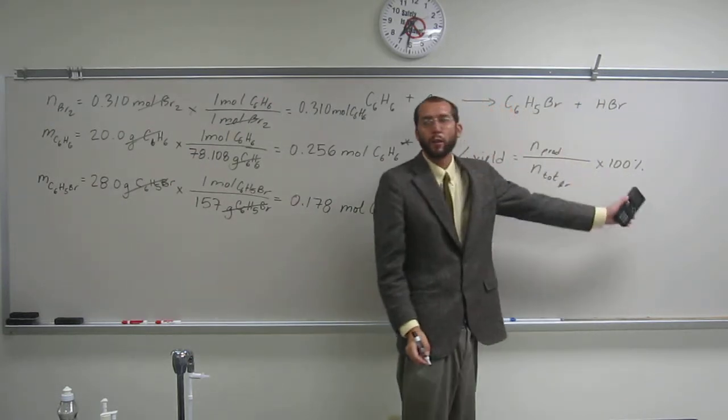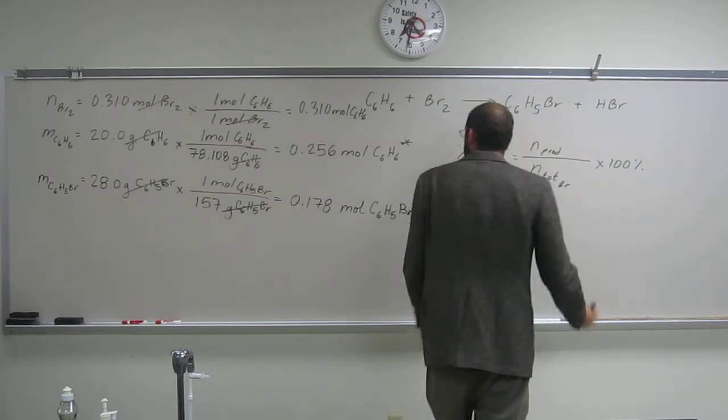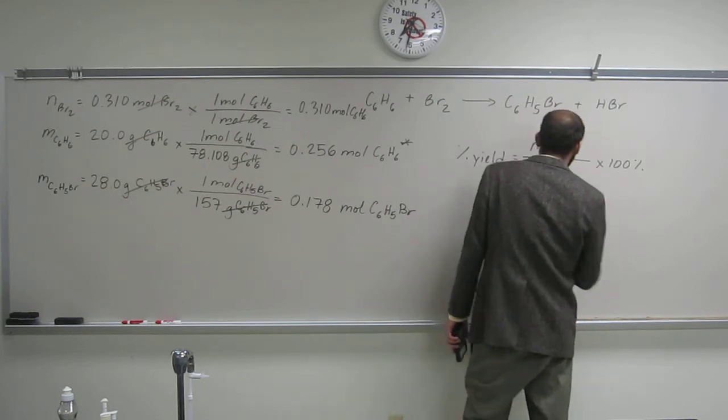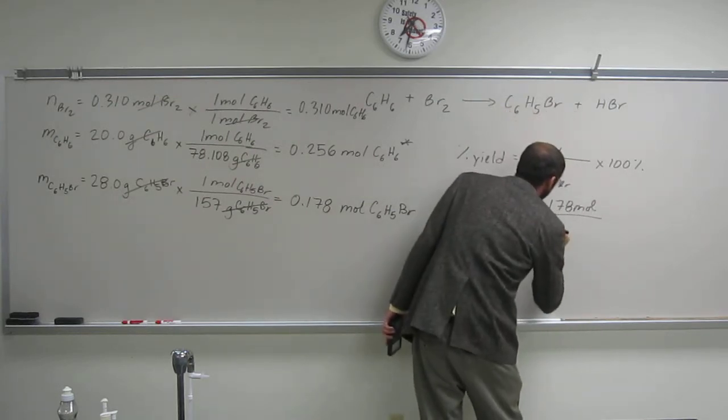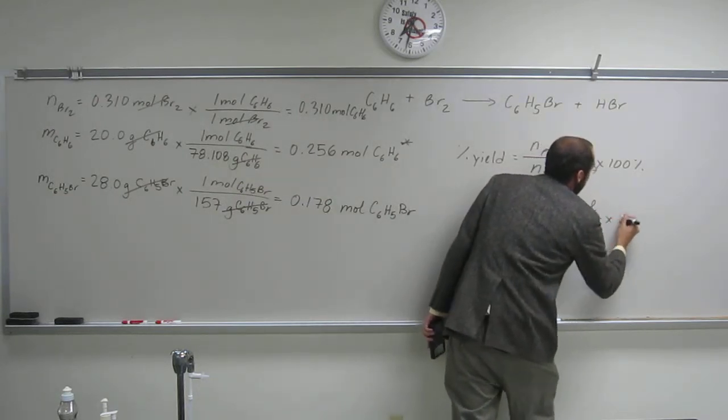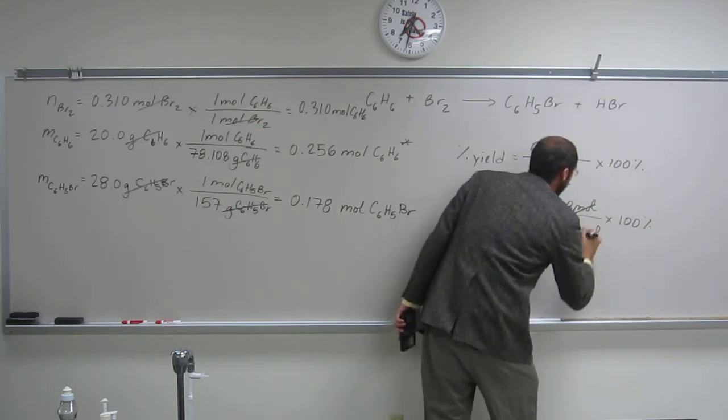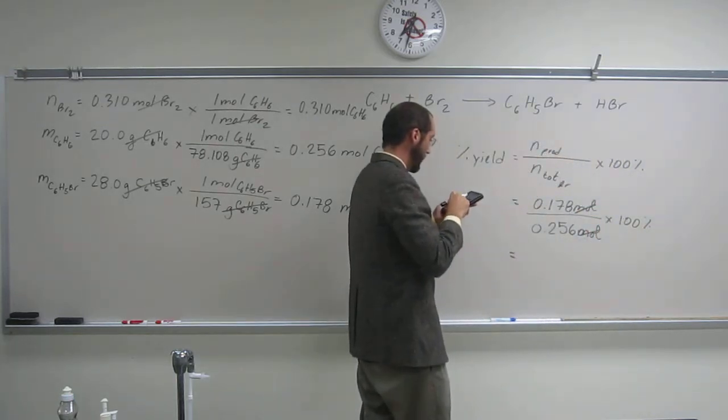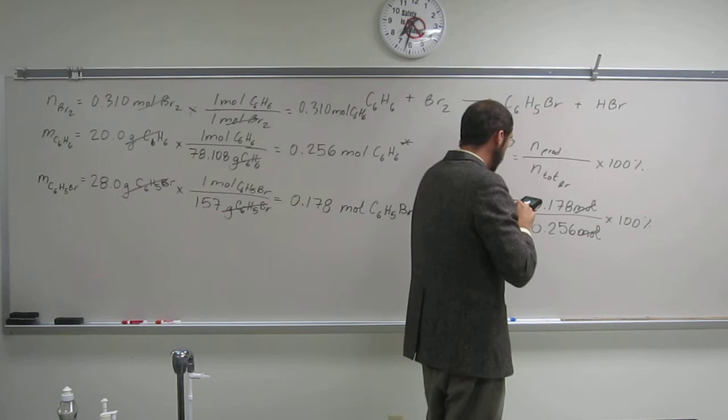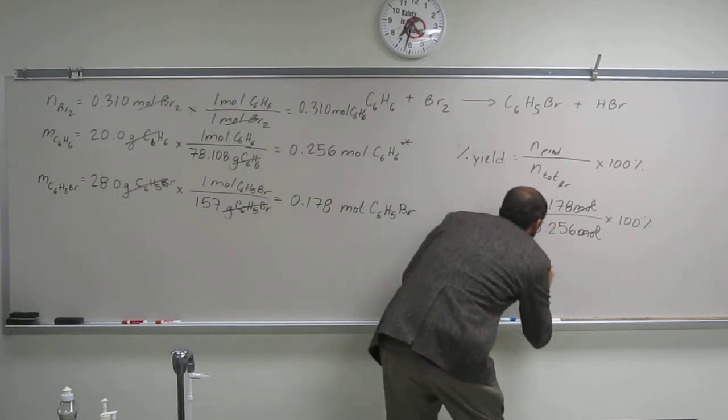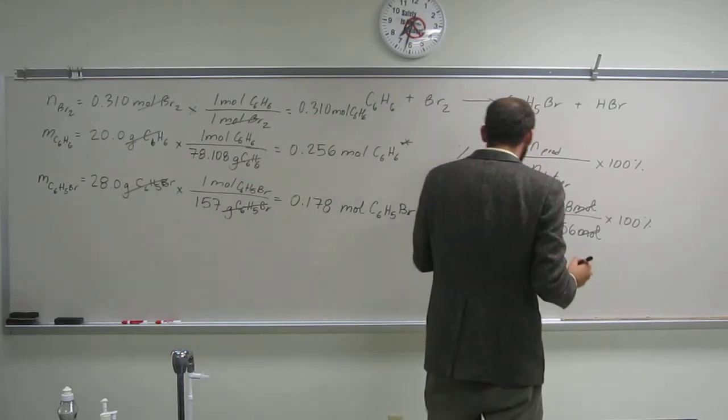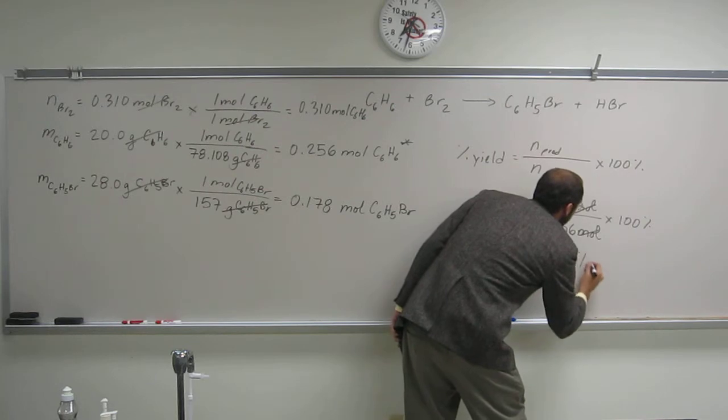Notice moles is going to cancel out here. The units are going to be percentage. Okay, so let's go ahead and do it. 0.178 moles divided by 0.256 moles times 100%. Cancel, cancel. Okay, so divide that by 0.256 moles. And I got, correct me if I'm wrong, 69 point, so what did we start with? With 3, so 69.7%, yeah.